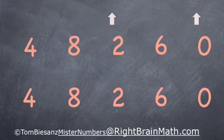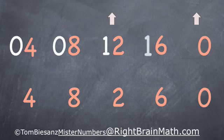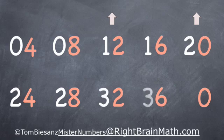Now in front of that, we put our tens: 0, 0, 1, 1, 2. And then 2, 2, 3, 3, 4 in the second row. And you've created the 4s times tables: 4, 8, 12, 16, 20, 24, 28, 32, 36, 40. You can create the 4s any time you want.